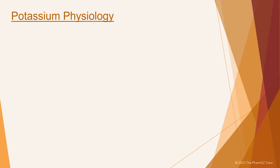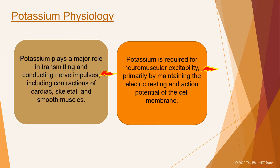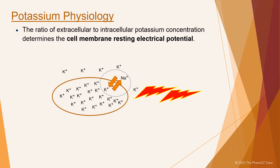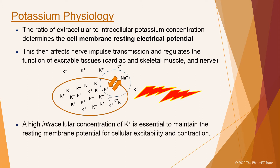Let's go over some of the physiology of potassium. Potassium plays a major role in transmitting and conducting nerve impulses, including contractions of cardiac, skeletal, and smooth muscles. Potassium is required for neuromuscular excitability, primarily by maintaining the electric resting and action potential of the cell membrane. The ratio of extracellular to intracellular potassium concentration determines the cell membrane resting electrical potential. This then affects nerve impulse transmission and regulates the function of excitable tissues — cardiac and skeletal muscle and nerve. A high intracellular concentration of potassium is essential to maintain the resting membrane potential for cellular excitability and contraction.